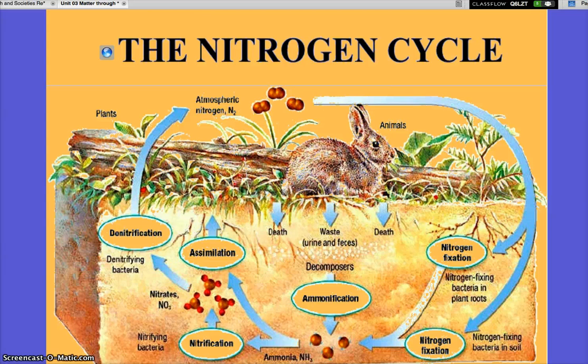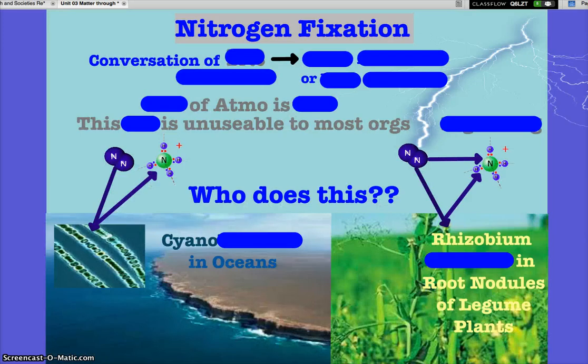Nitrogen cycle. I promise you phosphorus and sulfur will be easy, but we started with water — easy — carbon, and nitrogen — nightmare. N for nitrogen, N for nightmare. So get ready. Here it begins.